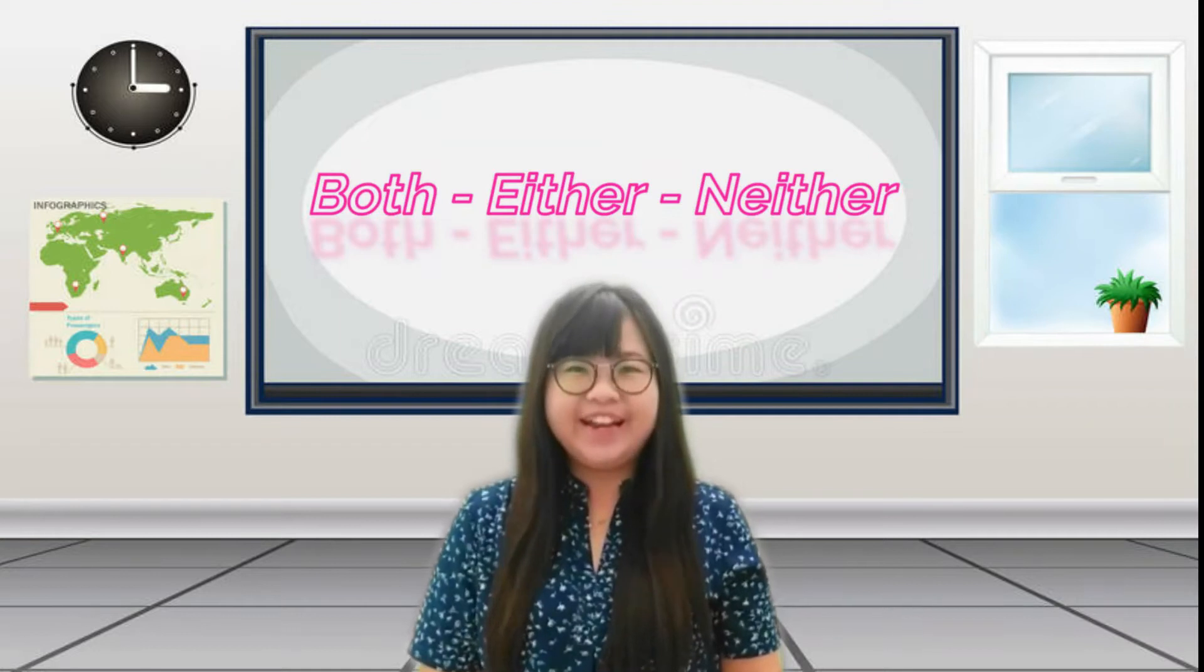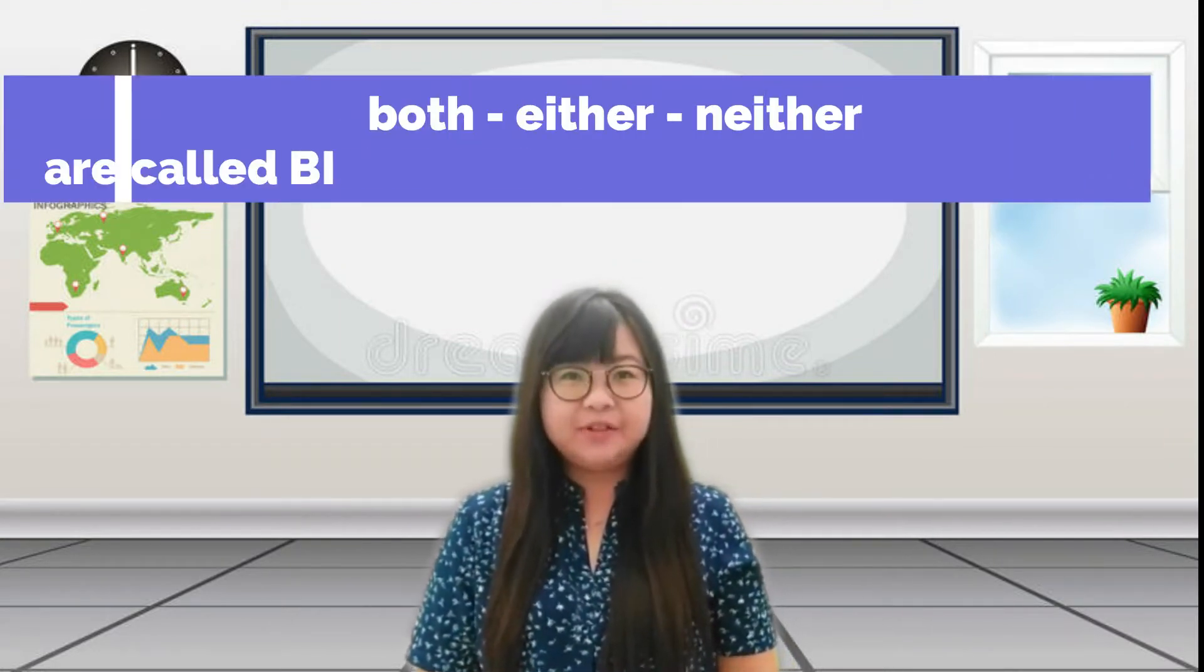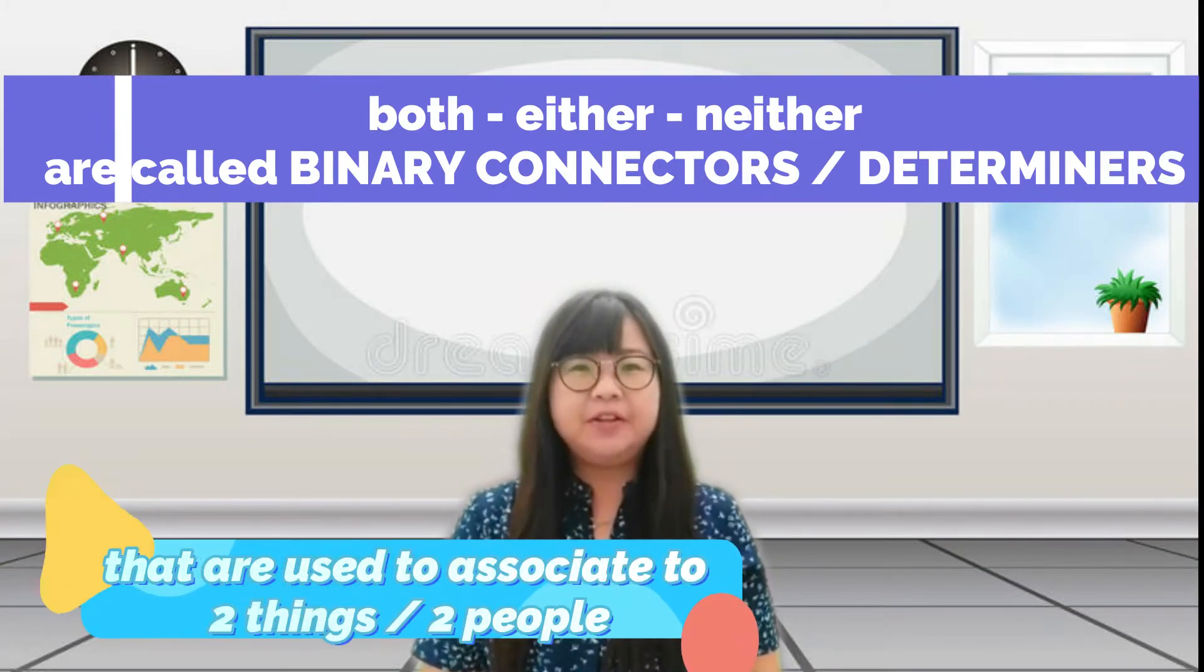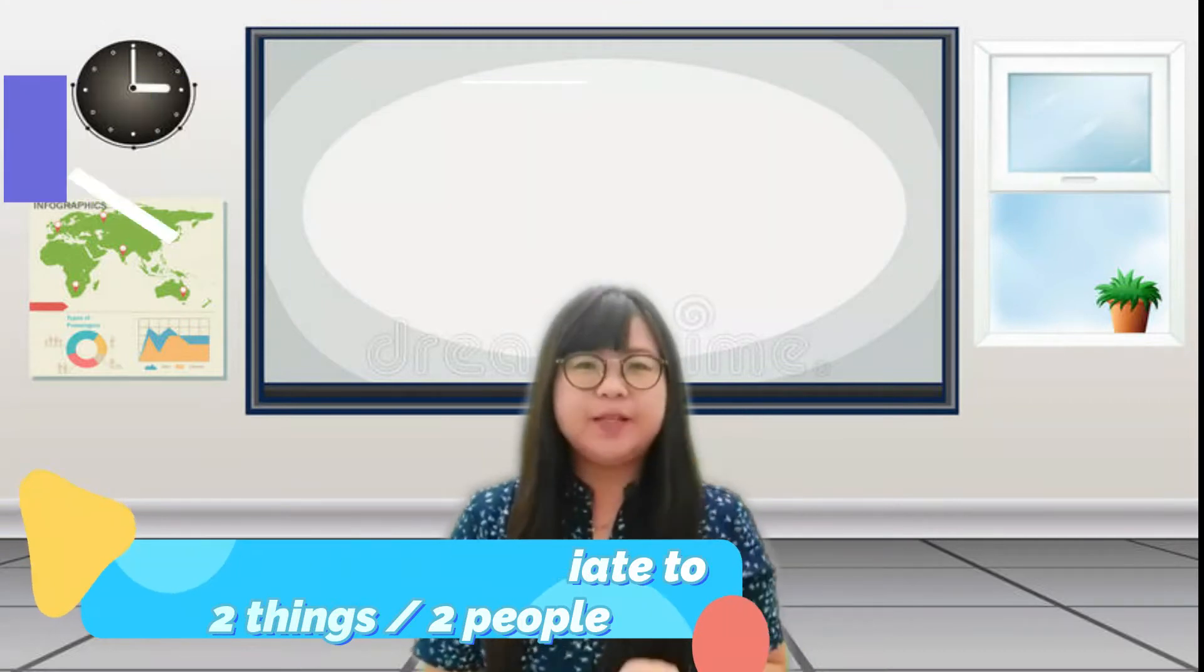Hi everyone, today we're going to talk about both, either, and neither. Both, either, and neither are called binary connectors or determiners. These three words are used to associate two things or two people.